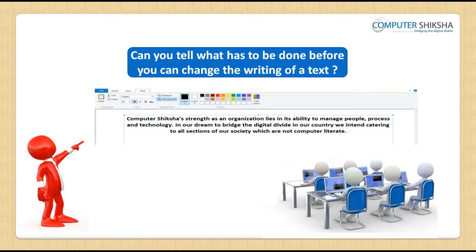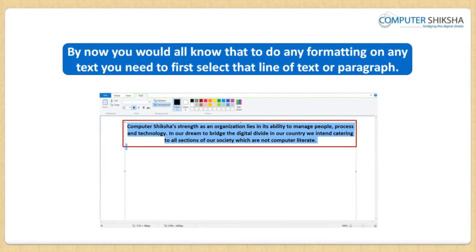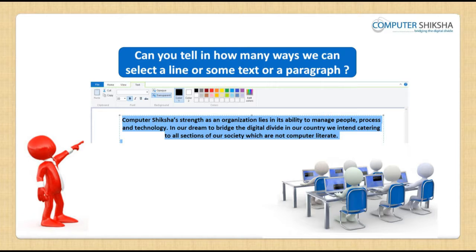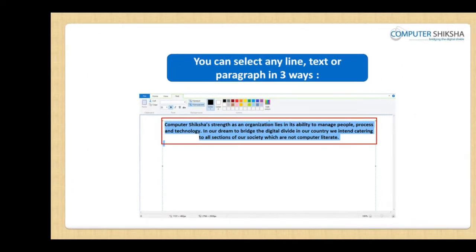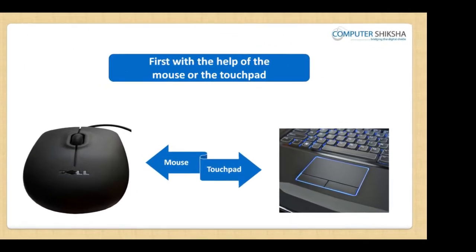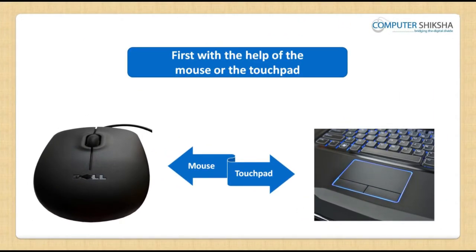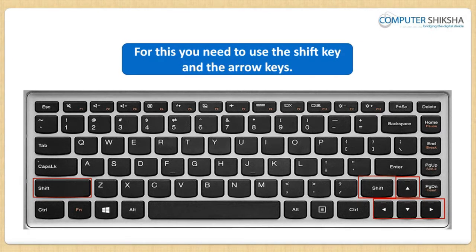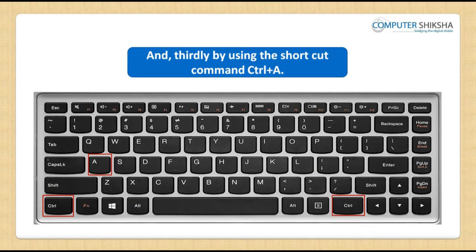Can you tell what has to be done before you can change the writing of a text? You would all know that to do any formatting on any text, you need to first select that line of text or paragraph. Only after you have selected the text or paragraph does your computer come to know that the changes have to be applied to this selected portion. You can select any line, text or paragraph in three ways: first, with the help of the mouse or the touchpad; secondly, with the help of the keyboard using the shift key and the arrow keys; and thirdly, by using the shortcut command Ctrl plus A.